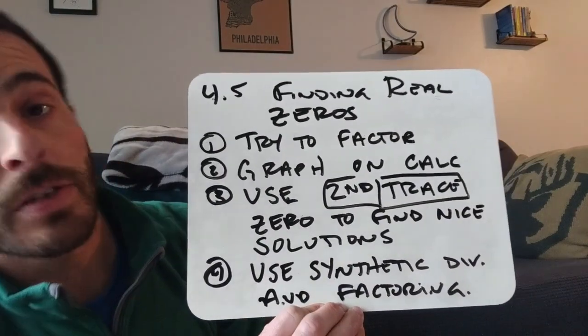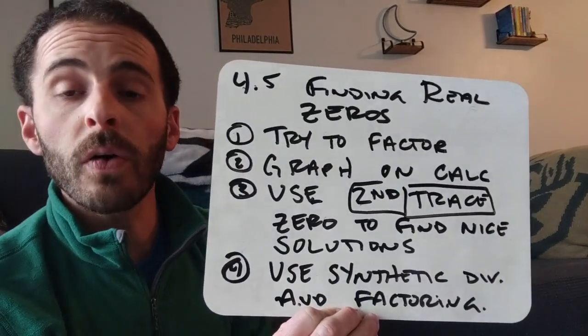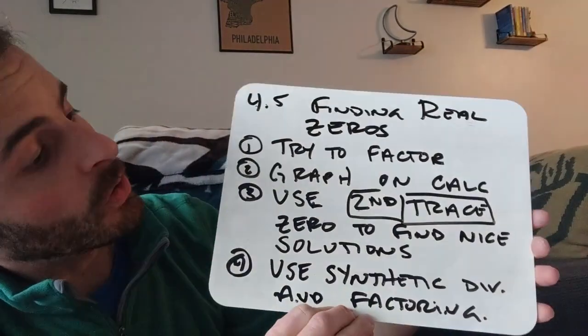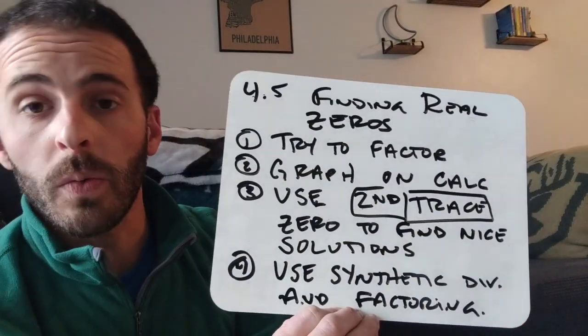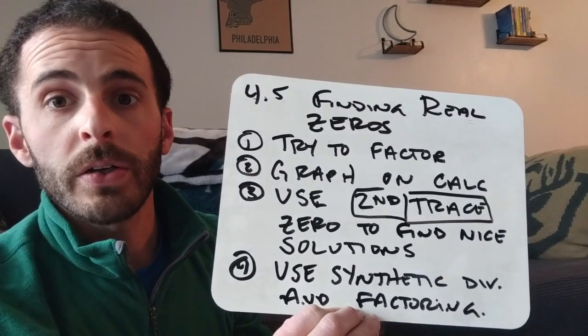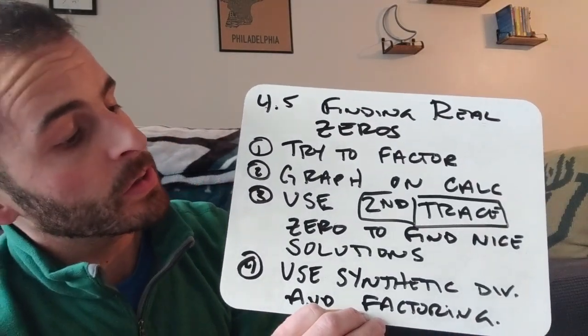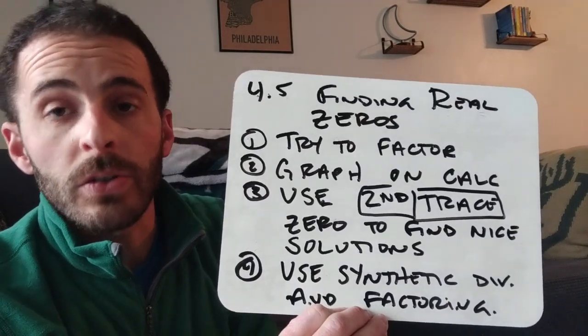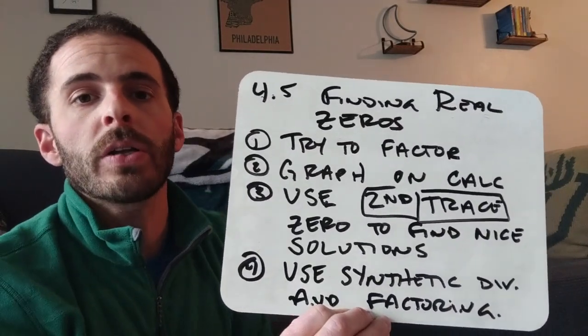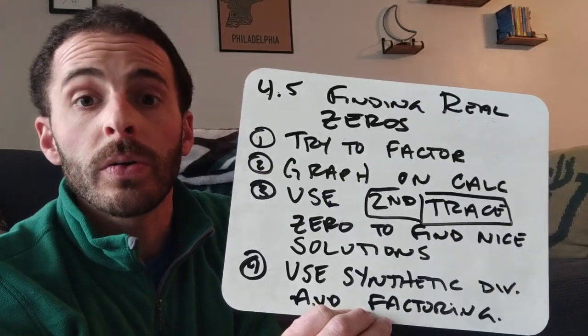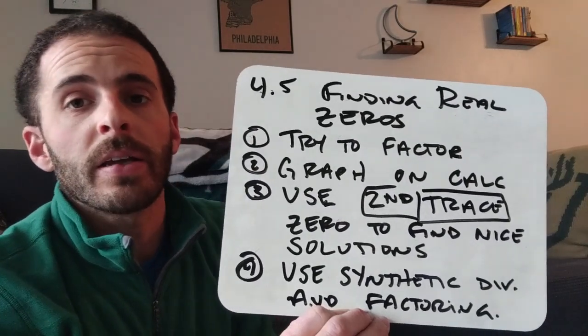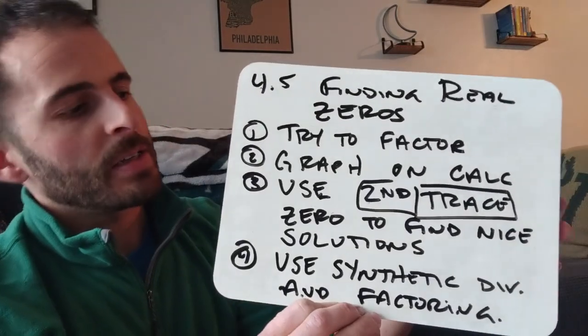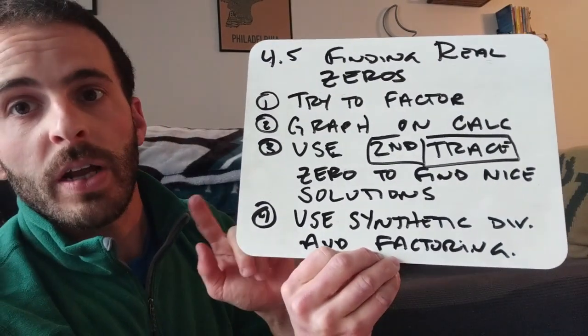So first, you're going to try to factor. It could be a quadratic form, it could be grouping, you don't know. Then you're going to graph it on your graphing calculator, so you're going to go to y equals, you're going to plug it in, you're going to go to graph, and then step 3, you're going to use the second trace and then 0 to find a nice solution. What do I mean by nice solution? I mean like 1 or negative 1, 2, any integer, anything that is nice, easy to see, easy to read.